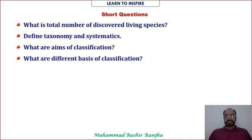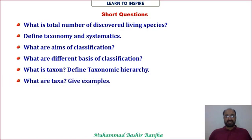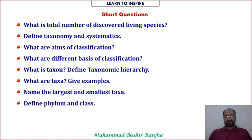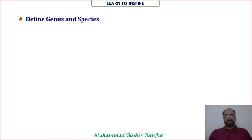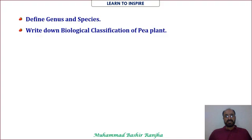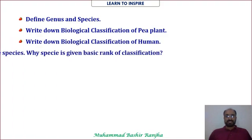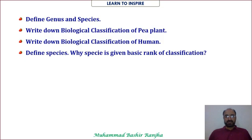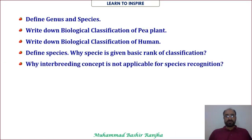For exam preparation: name the largest and smallest taxa — smallest is species, largest is kingdom. Define phylum and class; define order; define genus and species. Write down the biological classification of a pea plant and of a human. Define species and explain why species is given the basic rank of classification, and why the interbreeding concept is not applicable for species recognition in asexual reproducers.